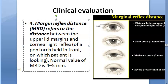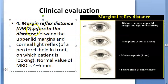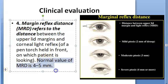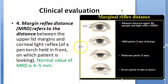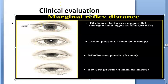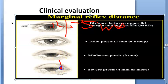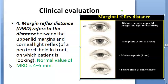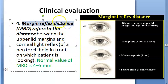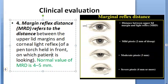Another evaluation is Marginal Reflex Distance (MRD) — the distance between the upper eyelid margin and the corneal light reflex. Normal MRD is 4 to 5 millimeters. As you can see in the image, as ptosis increases, the distance between the lid margin and the corneal reflex reduces.